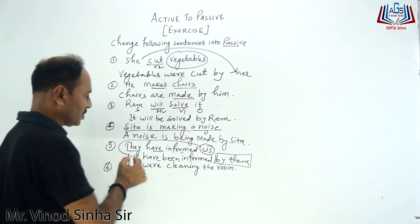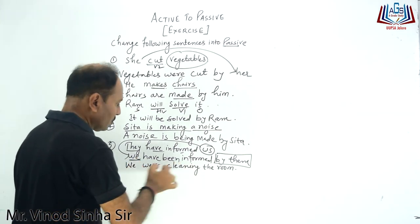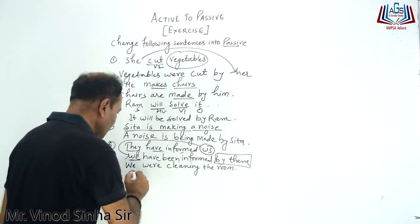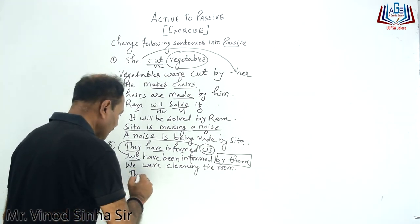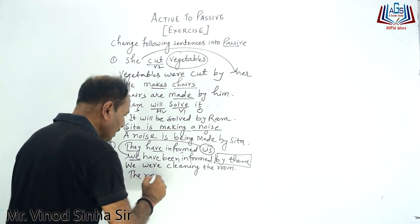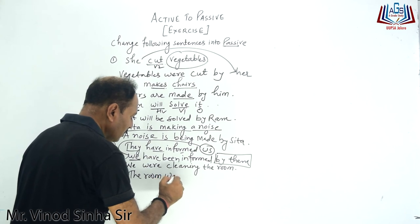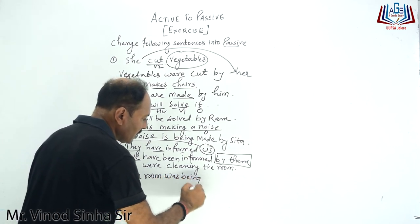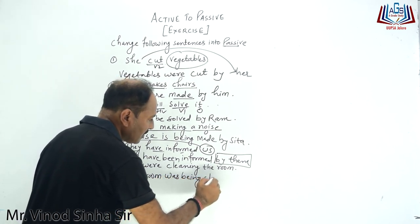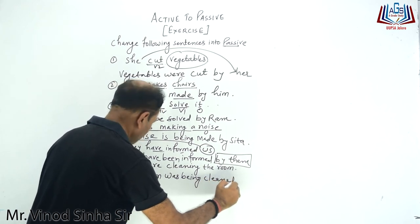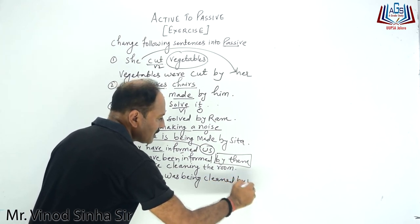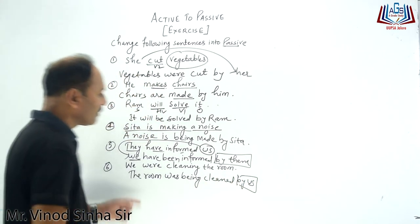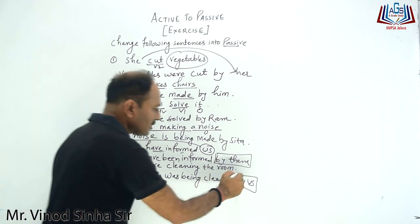And the last but not least: 'We were cleaning the room.' You can identify it is past continuous. 'The room' comes here as subject — now it becomes a singular case. With 'be' it was 'were', so here 'the room was'. This is past continuous, so 'being' is added. Third form — 'cleaned'. The room was being cleaned by us. There is no need to take 'us' here, but still I have written it for teaching purposes.